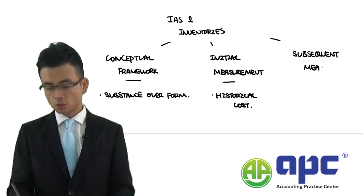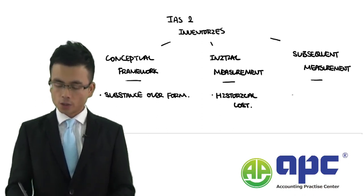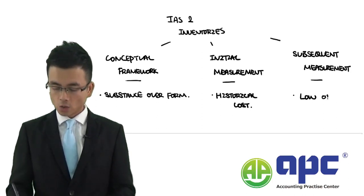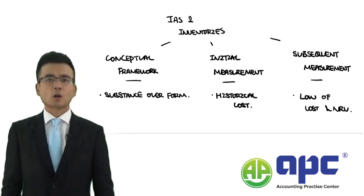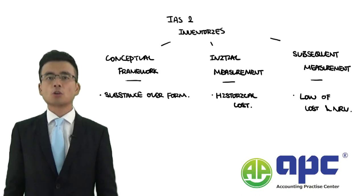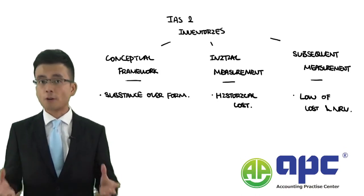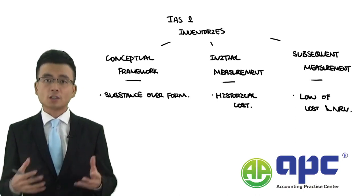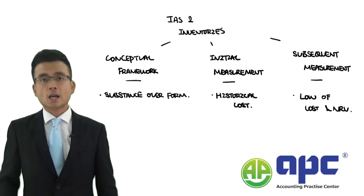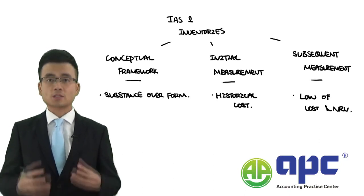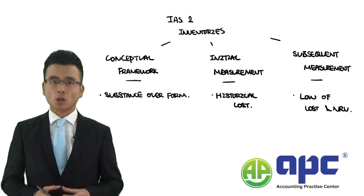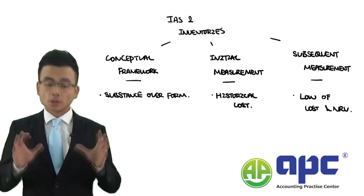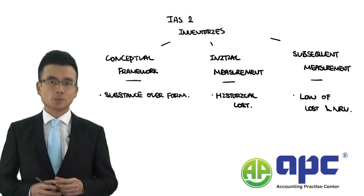For subsequent measurement, we may account for impairment on inventories, following the concept of the lower of cost and net realisable value. We will also touch on accounting policies relating to cost — for example, you can use the first-in, first-out method or the weighted average cost method — and the accounting estimate in determining net realisable value, by taking the estimated selling price and subtracting the estimated cost to complete and sell the inventories.